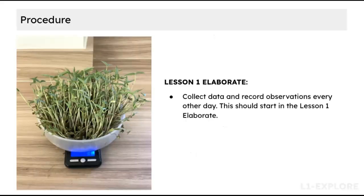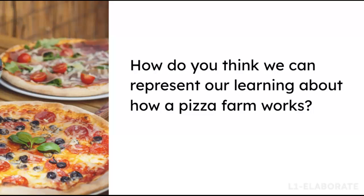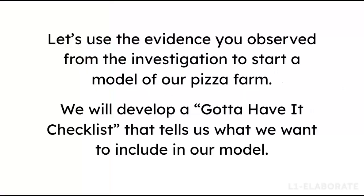In the Elaborate portion and throughout the unit, students will develop a model of how energy and matter move along on a pizza farm using the pizza farm model student journal page. They will start their model in Lesson 1 and revisit it after most lessons. To guide students in making the best model, you will develop a gotta-have-it checklist that tells students what to include in the first part of their model.